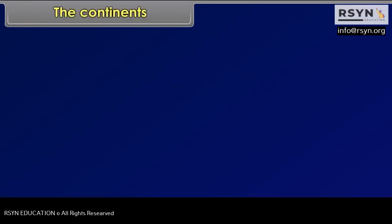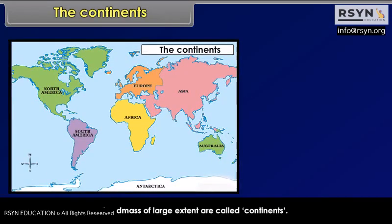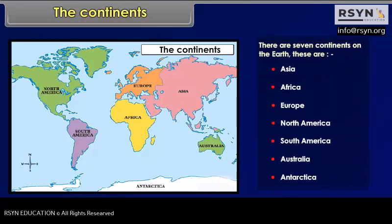Large land masses of great extent are called continents. There are seven continents on the Earth. These are Asia, Africa, Europe, North America, South America, Australia, and Antarctica.